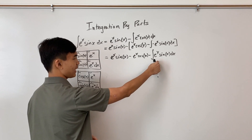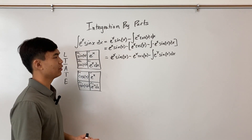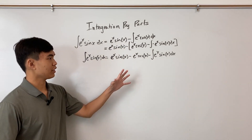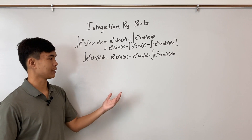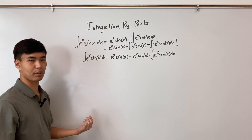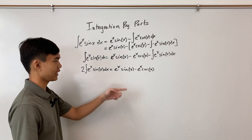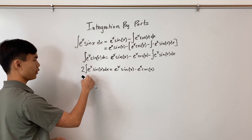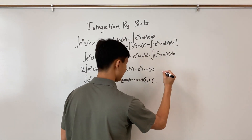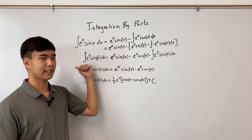Notice that we now have the integral of eˣ sin(x) dx on the right side, which is exactly the same problem we're trying to solve — it looks like an infinite loop. But just like numbers, we can add and subtract integrals from both sides. Adding the integral of eˣ sin(x) dx to both sides gives 2 times the integral of eˣ sin(x) dx equals eˣ sin(x) minus eˣ cos(x). Dividing by 2 gives the final answer, plus C. Whenever you see the original integral reappear on the right side, just add it to the left.